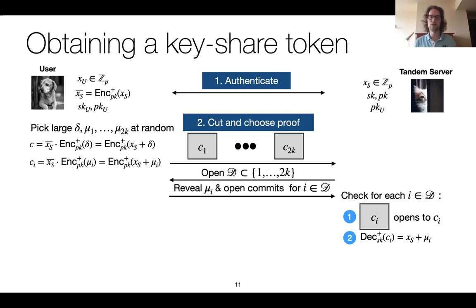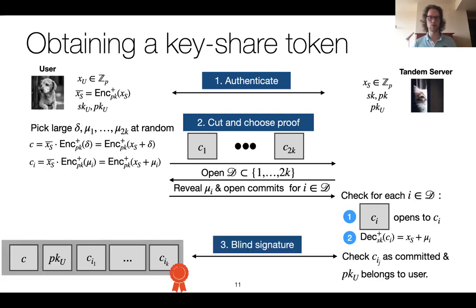We are left with the commitments to the remaining k values C_i. These remaining C_i are included in the key share token along with the ciphertext C — the encryption of XS plus delta — and the public key. The user and tandem server then run the blind signature protocol on this token. As part of this protocol, the tandem server verifies that the C_i's are as committed and that the public key is correct. We will see on the next slide why this cut-and-choose proof was actually helpful.